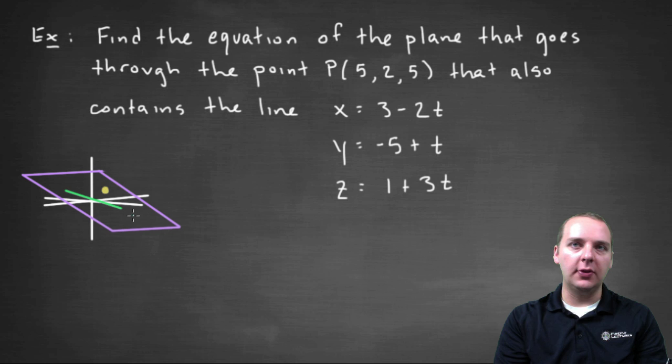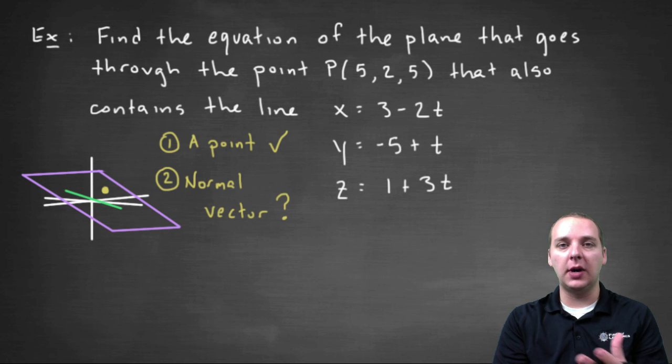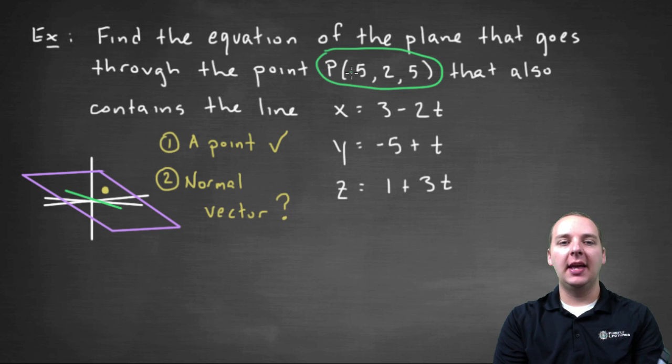Now when you think back to when we were talking about equations of planes, we needed two things to write the equation of a plane down. We needed a point in the plane, any point in the plane, which we have provided to us. And then we also needed a normal vector for the plane, a vector that met the plane at a right angle. That seems to be the thing that's missing.